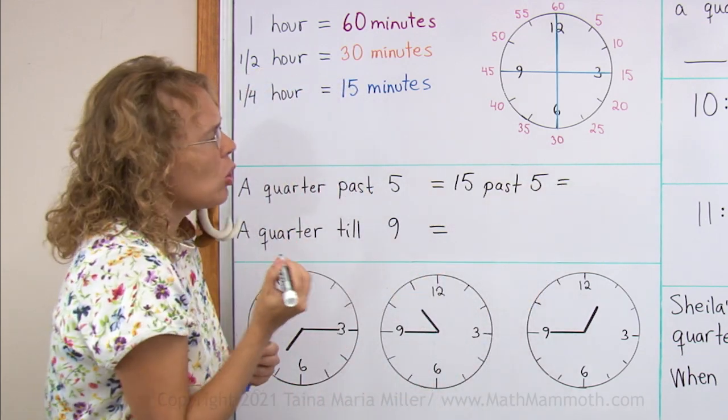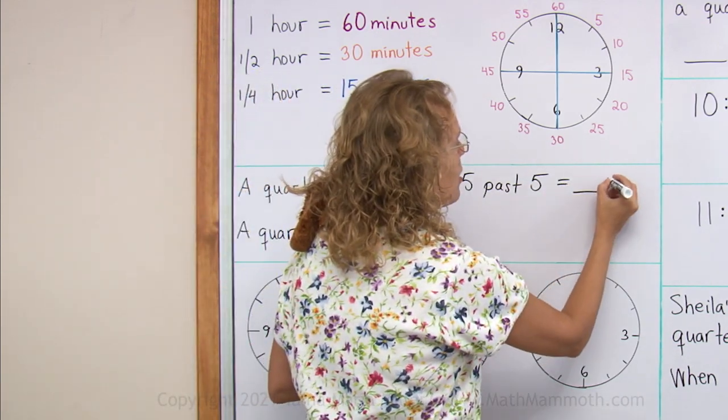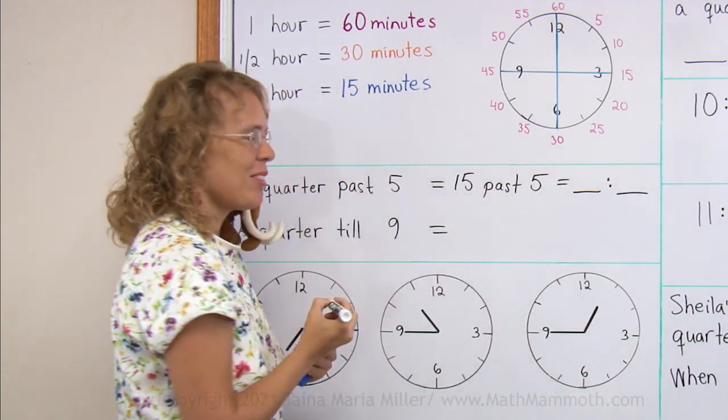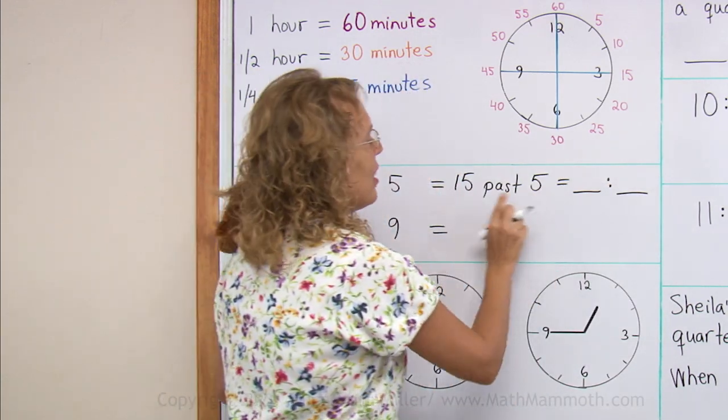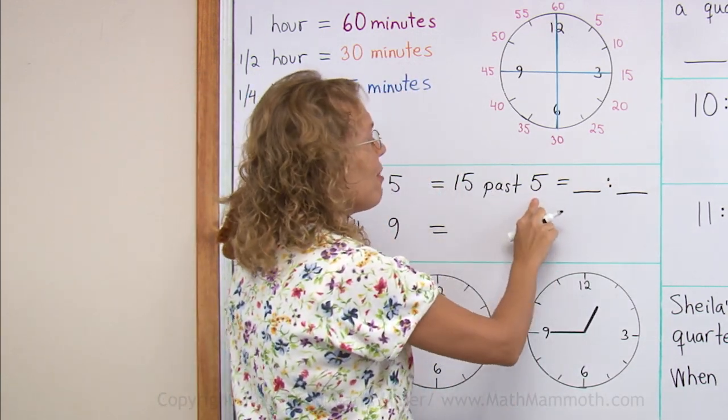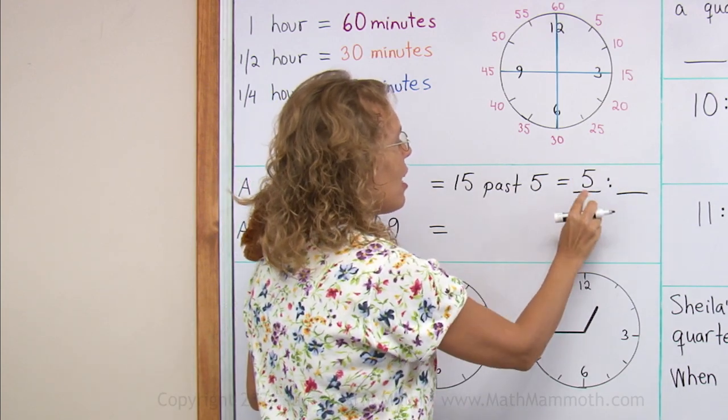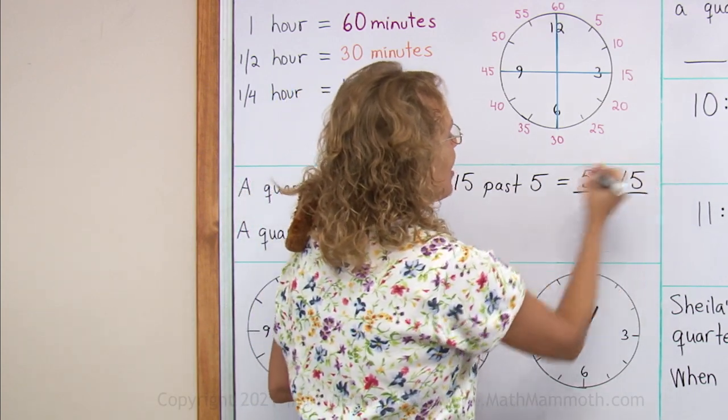And let's write it also using the hours and minutes way. You remember that? 15 minutes past 5 hours, so we write 5 the hours first and the minutes last. 5:15.